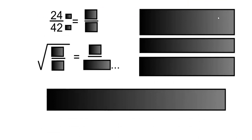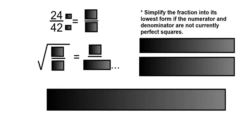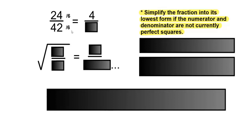24 over 42. Simplify the fraction into its lowest form if the numerator and denominator are not currently perfect squares. Looking at the numerator, I know that 24 is not a perfect square, so we'll reduce. 24 and 42 are both divisible by 6. 24 divided by 6 is 4, and 42 divided by 6 is 7.